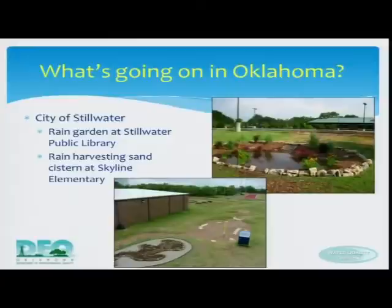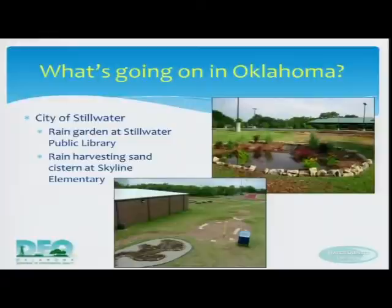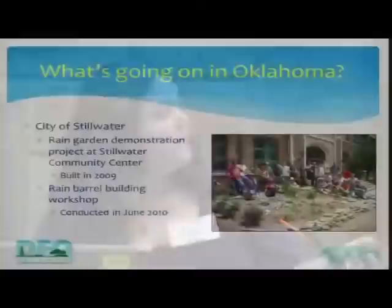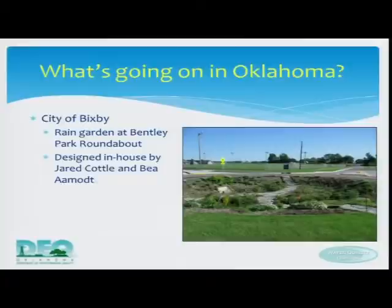The City of Stillwater has a rain garden at the Stillwater Public Library, installed in 2011, and a rain harvesting sand cistern at Skyline Elementary, installed in 2009. They also have their rain garden demonstration project at the Stillwater Community Center, installed with the help of volunteers, and conducted a rain barrel workshop in June 2010.